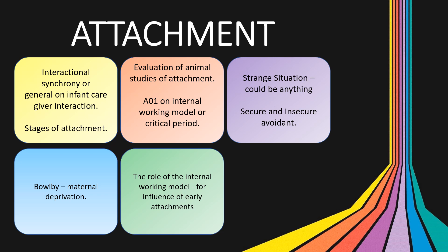We've had practically nothing on the strange situation, which is huge, and this would certainly be my big prediction for 2020. Make sure you can describe the procedures and findings, and also be able to evaluate the strange situation as a method of assessing attachment types. There may also be something specific to the secure and insecure avoidant attachment types. Bowlby's maternal deprivation hypothesis hasn't been mentioned at all — another big red flag. Beware that his maternal deprivation hypothesis is different from his monotropic theory, so make sure you know your 44 thieves study. There may also be a sneaky question on the role of the internal working model, as it hasn't been specifically mentioned yet.